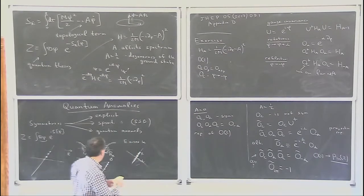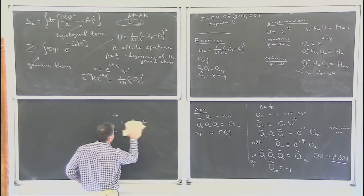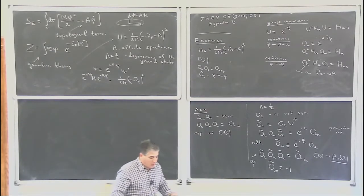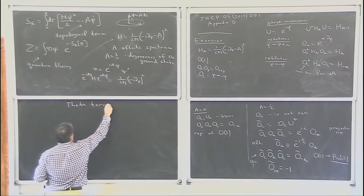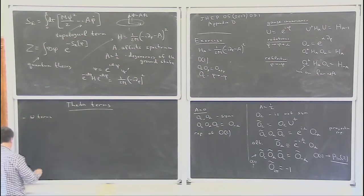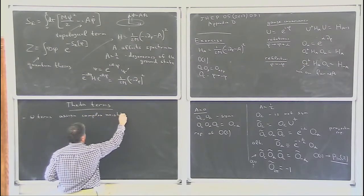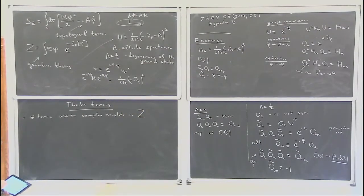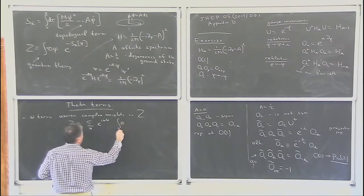Now let me conclude my first exploration of theta terms by listing their general properties. First: theta terms assign complex weights in the partition function to various configurations — space-time textures with integer topological charge q. Basically, you write Z as a sum over q of e^(i theta q) times a path integral within sector q. That's the typical structure.